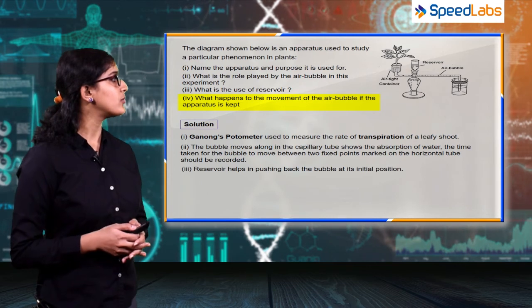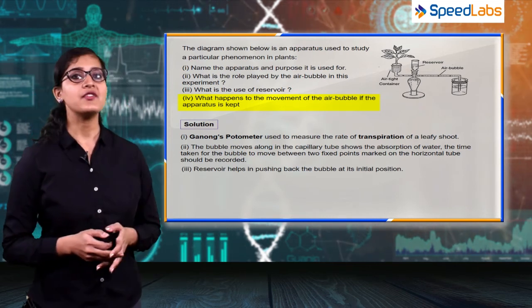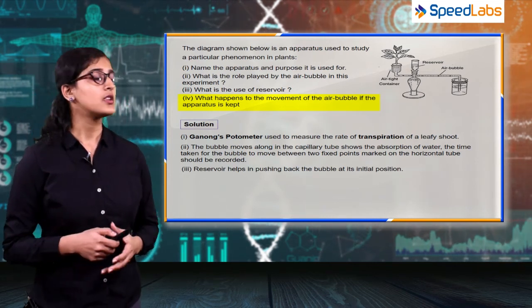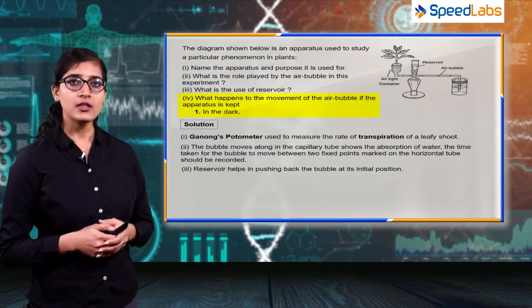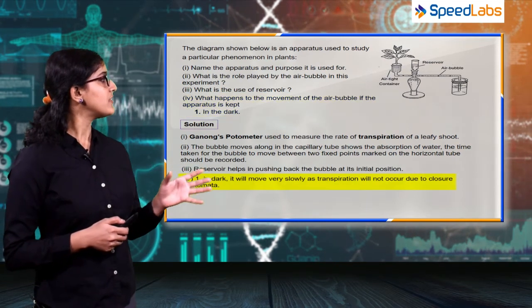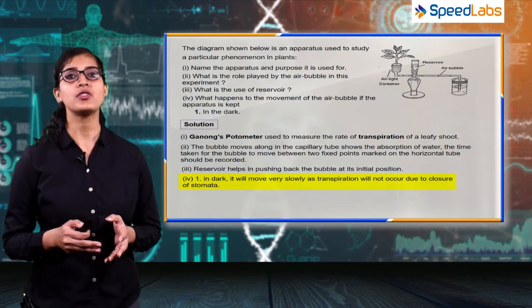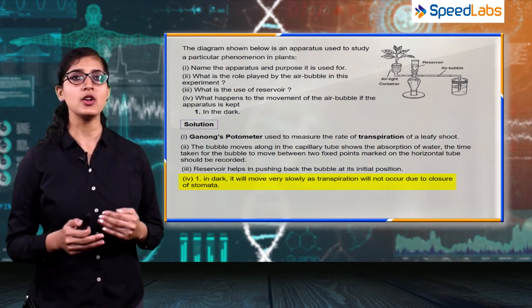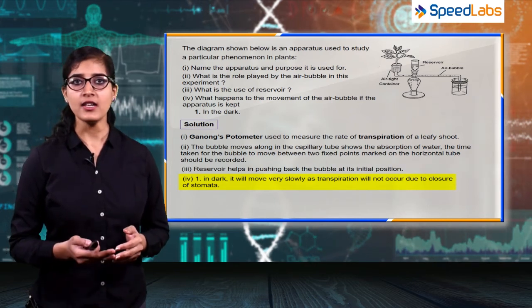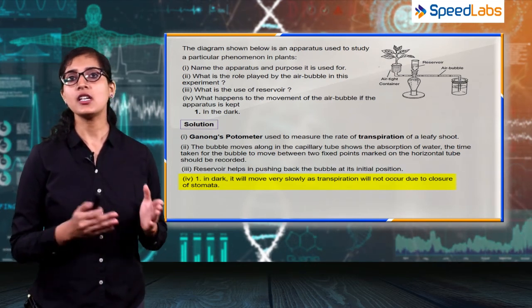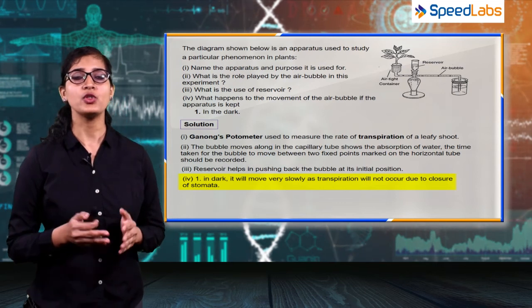The next question is: what happens to the movement of the air bubble if the apparatus is kept first in the dark? It will move very slowly, as transpiration will not occur due to closure of stomata. As you are keeping the plant in dark, there is no sunlight, so light intensity will directly affect the rate of transpiration. There is reduced rate of transpiration, hence the bubble will move slowly.